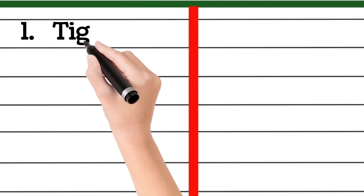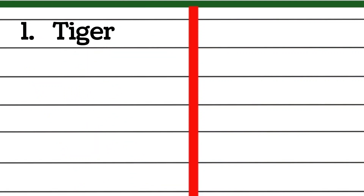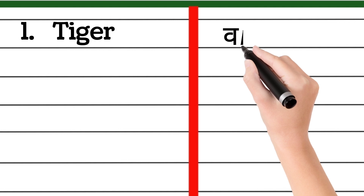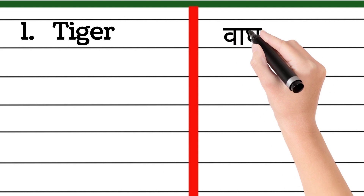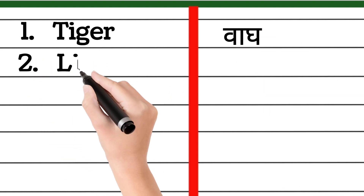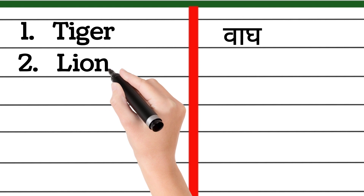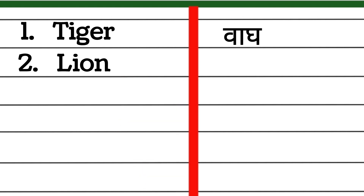T-I-G-E-R, tiger. Tiger means wag. L-I-O-N, lion. Lion means shiha.